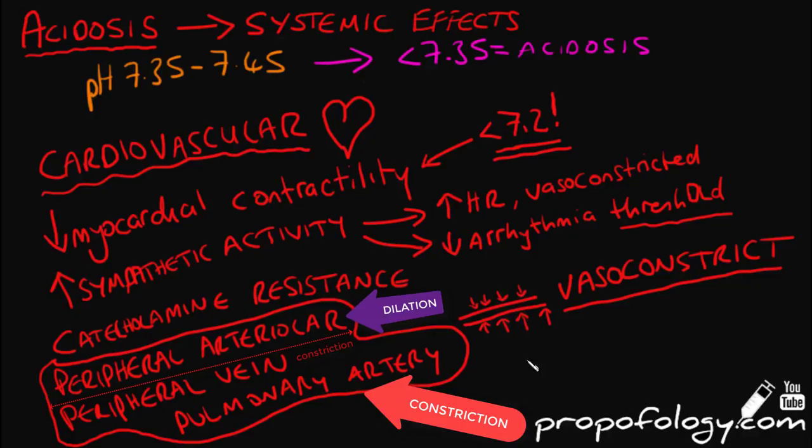Acidosis causes potassium to shift out of the cells, and you need to be really careful when considering potassium's effect on the heart as it's profoundly arrhythmogenic at high levels.